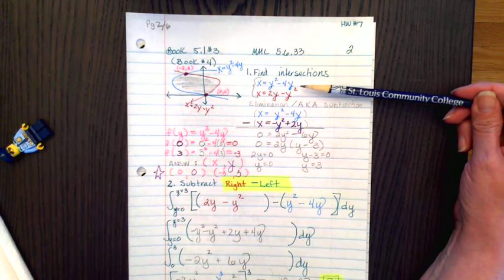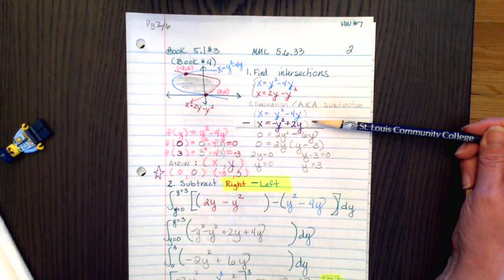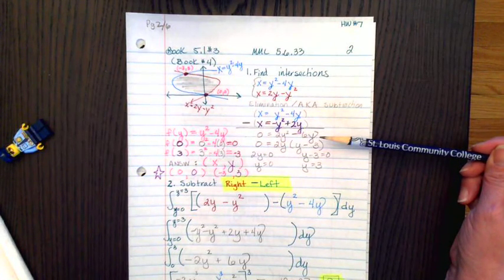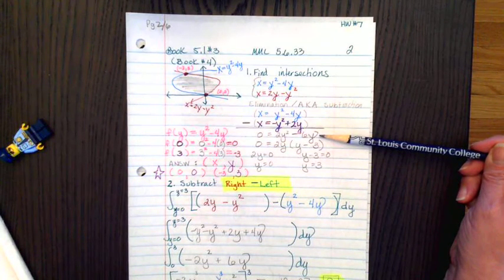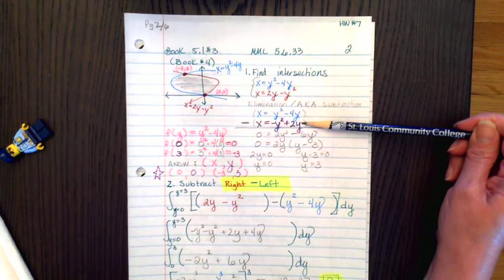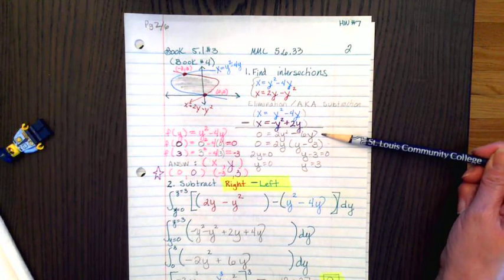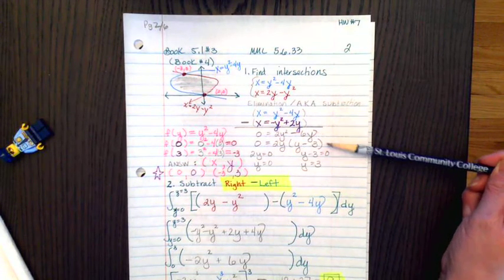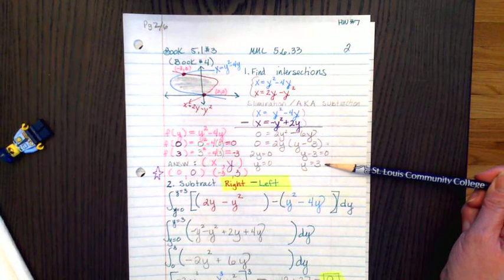I'm going to use the elimination method. So we've got negative 4y minus x equals negative y squared plus 2y. x minus x is 0. We get 2y squared minus 6y. And so we get this quadratic equation, which we can solve by factoring. The two factors are 2y and y minus 3. Setting them equal to 0, we get y equals 0 and y equals 3.